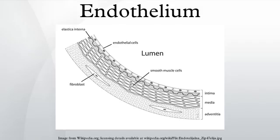Blood clotting: the endothelium normally provides a non-thrombogenic surface because it contains, for example, heparin sulfate, which acts as a cofactor for activating antithrombin, a protease that inactivates several factors in the coagulation cascade.